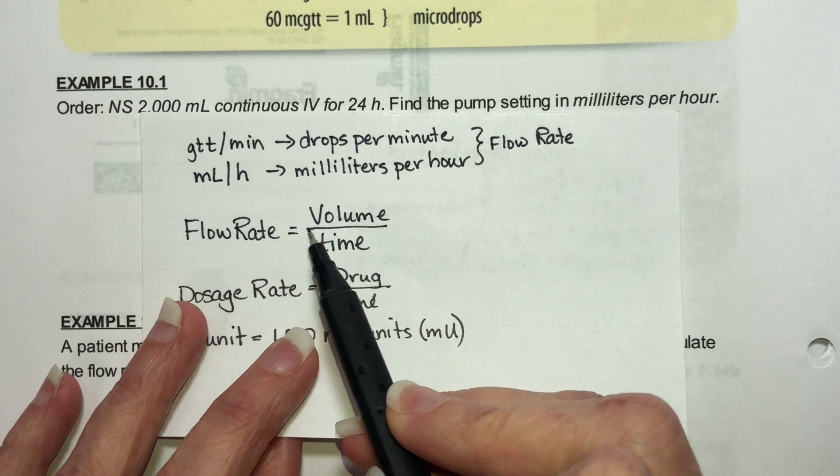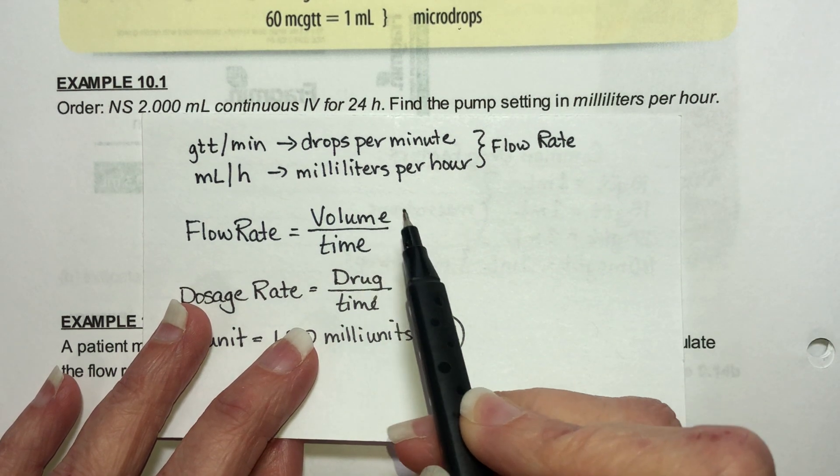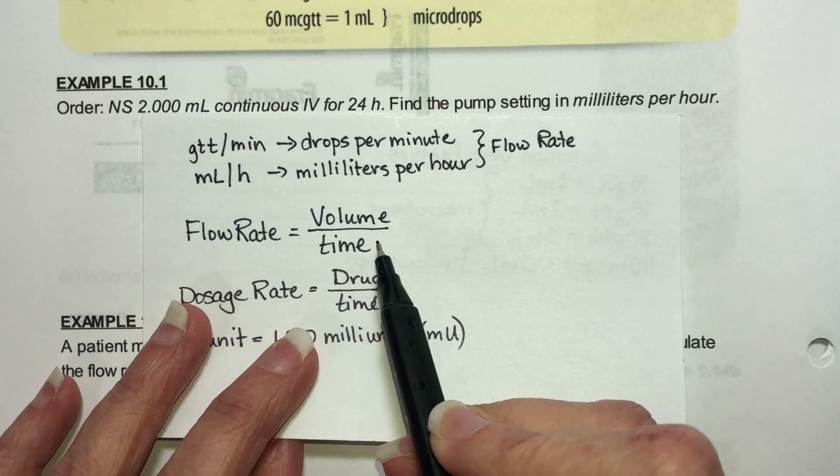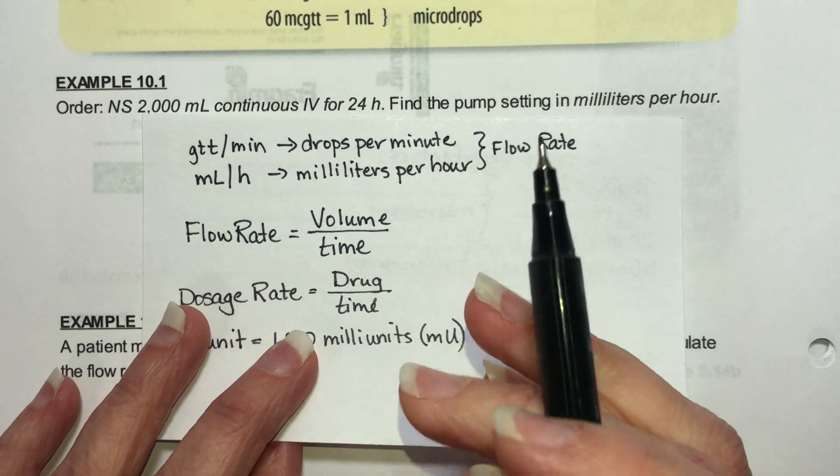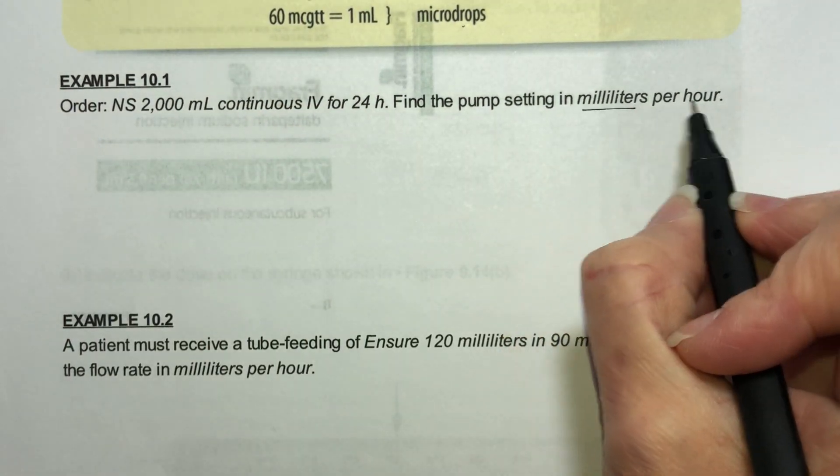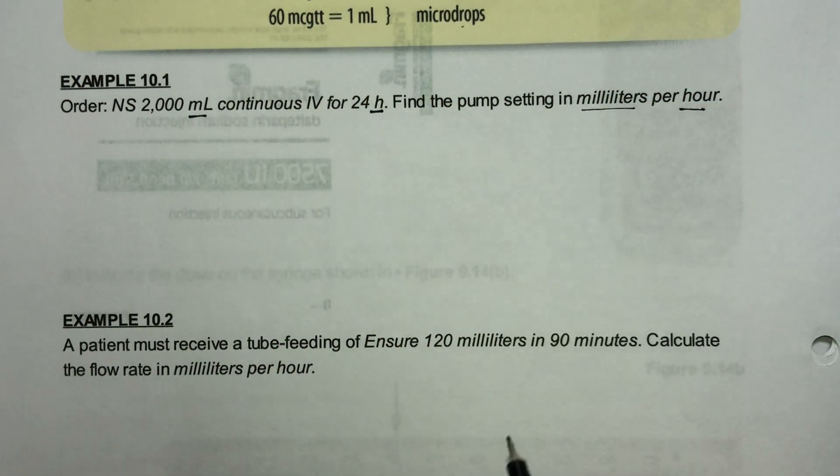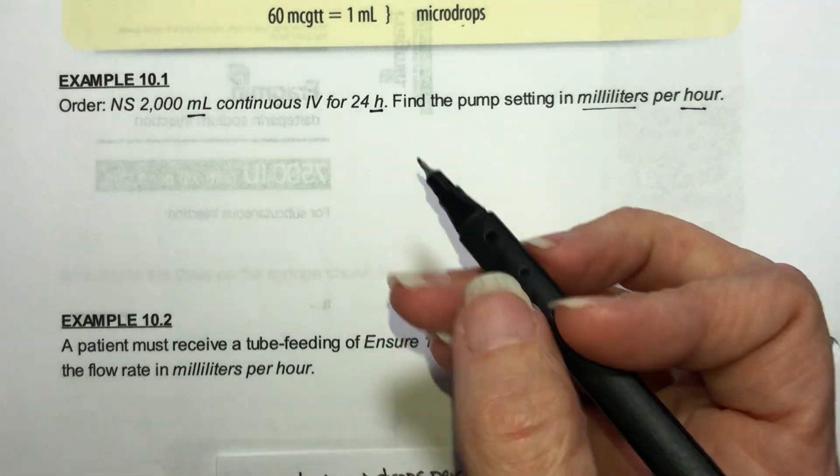To find the flow rate of something it's always the volume of the amount that we're giving the patient over the amount of time that we are giving the medicine to that patient. Right here we're supposed to give it in milliliters per hour and we have milliliters and we have hours. So it's really just a question of doing the division.